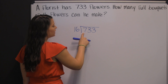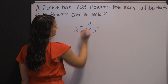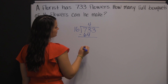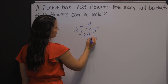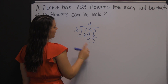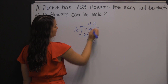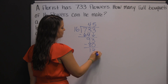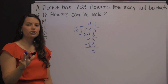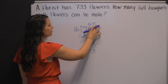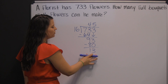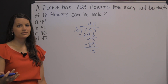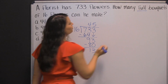16 cannot go into 7, but it can go into 73 four times. 16 times 4 is 64. Subtract — 73 minus 64 is 9. Bring down the 3, and 16 goes into 93 five times. 16 times 5 is 80. Subtract and we get a remainder of 13. You have 45 bouquets made up of 16 flowers each, and then 13 flowers left over. Those leftover flowers can't make another full bouquet of 16. So he can only make 45 full bouquets.